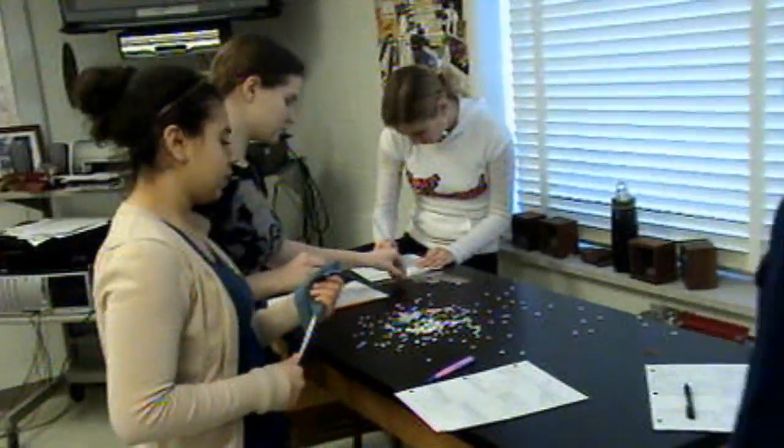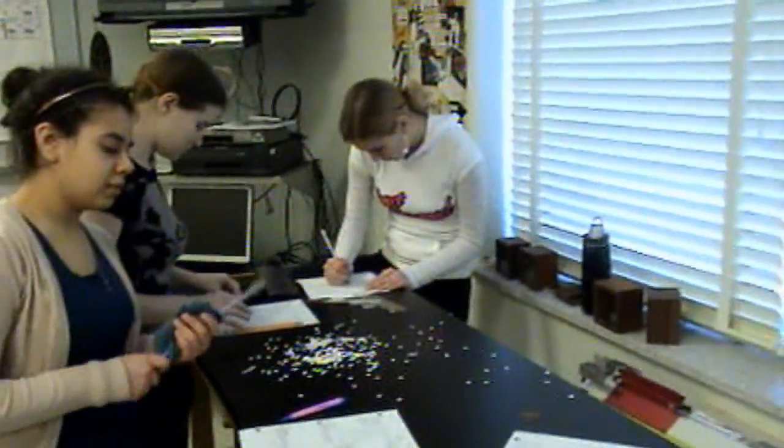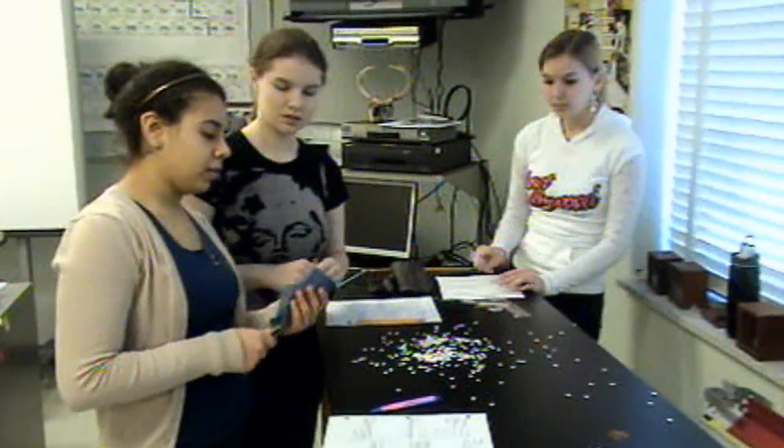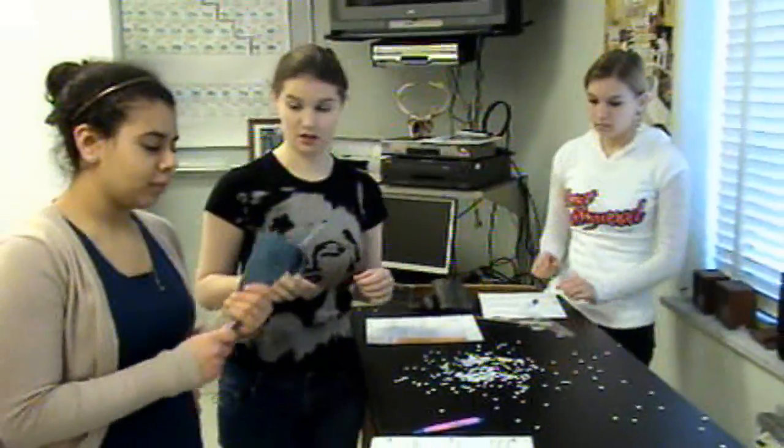Explain to me what you're supposed to do one at a time and then perform it and explain what happens. First, we're rubbing the ruler with felt to give it a charge.